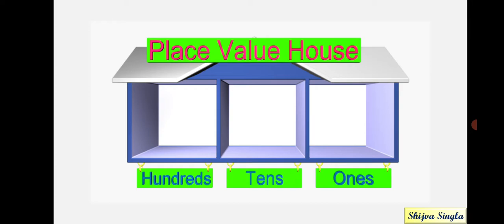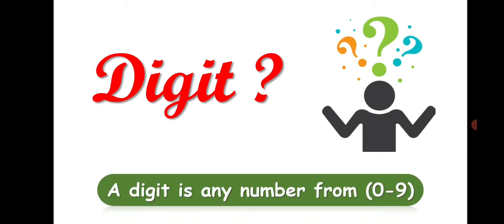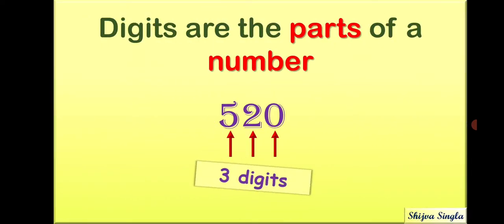Now, you must be wondering what is a digit? Well, a digit is any number from 0 to 9. Also, you can say digits are the parts of a number. Like, there are three parts in this number, so these are three digits.